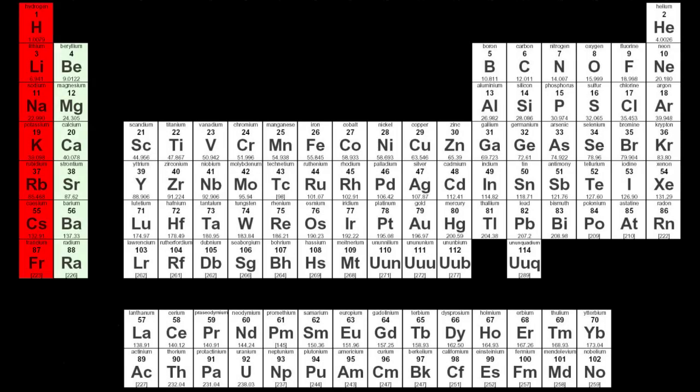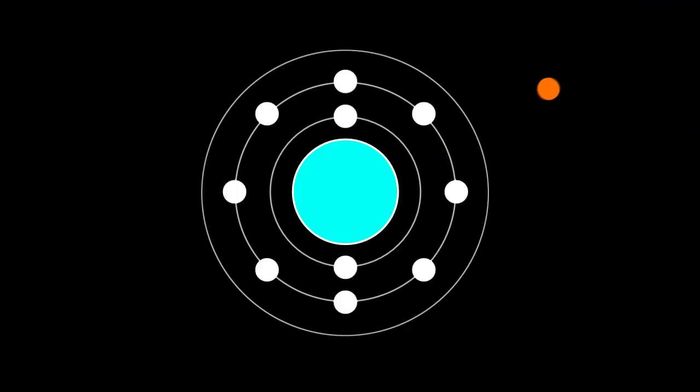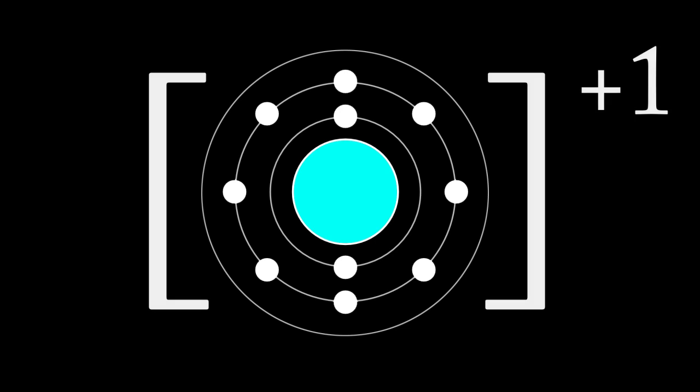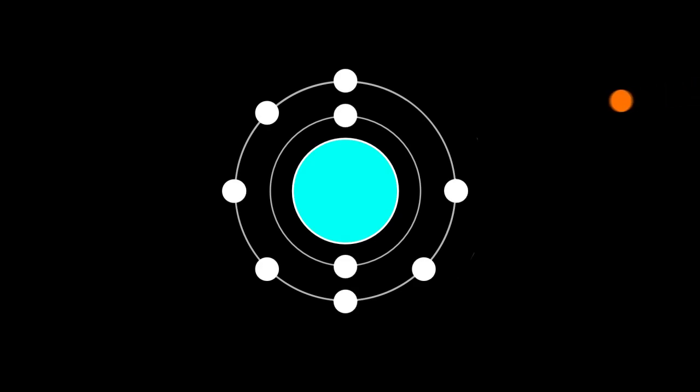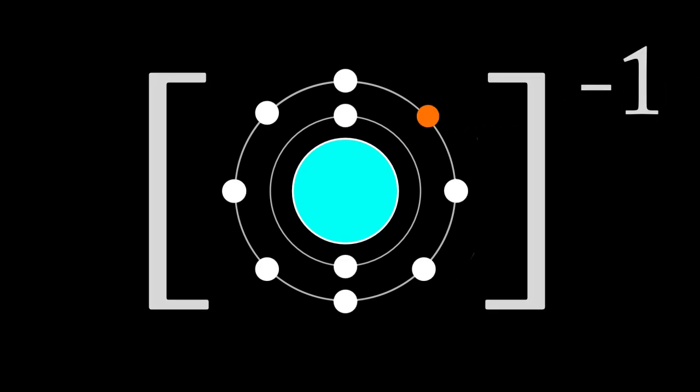Group 1 and 2 elements will lose or donate electrons, creating an ion with a positive charge known as a cation. Similarly, group 6 and 7 elements will gain or accept an electron, creating an ion with a negative charge known as an anion.